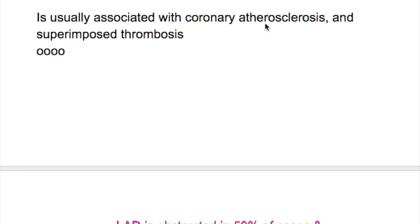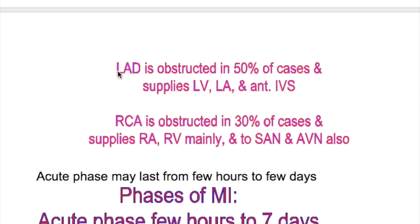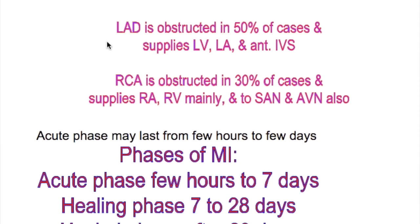The cause of myocardial infarction is coronary atherosclerosis and superimposed thrombosis. The left anterior descending artery is occluded in 50% of cases and it supplies the left ventricle, left atrium, and anterior interventricular septum.